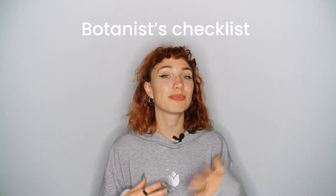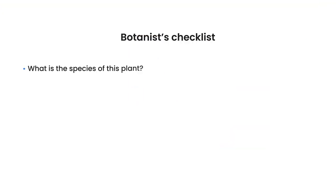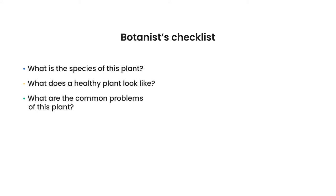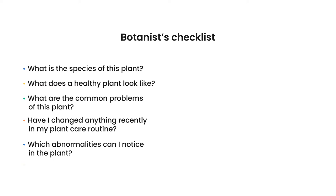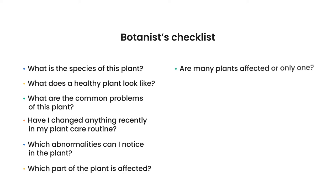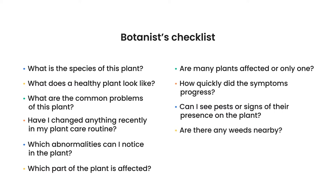The last thing for this video is a little botanist checklist to help you step by step when diagnosing a new plant: What is the species of the plant? What does the healthy plant look like? What are the common problems of this plant? Have I changed anything recently in my plant care routine? Which abnormalities can I notice? Which part of the plant is affected? Are many plants affected or just this one? How quickly did the symptoms progress? Can I see pests or signs of their appearance? Are there any weeds nearby? And are the environmental conditions good for the plant?